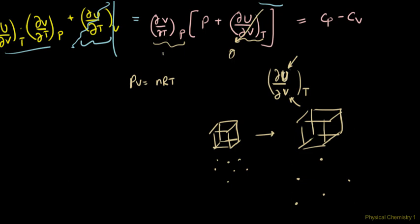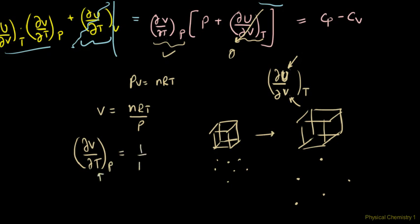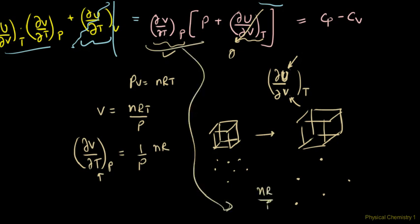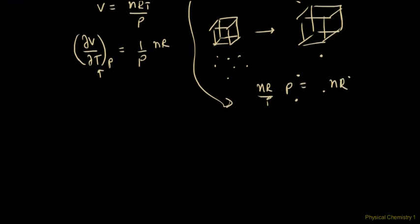I can easily calculate ∂V/∂T at constant pressure from PV = nRT. Differentiating with respect to T at constant P, the pressure comes out and we get nR/P. Substituting back: CP minus CV equals (nR/P) times P, which gives nR. So for ideal gases, CP minus CV equals nR, and for molar specific heats, CP,m minus CV,m equals R. This is an important result to remember.